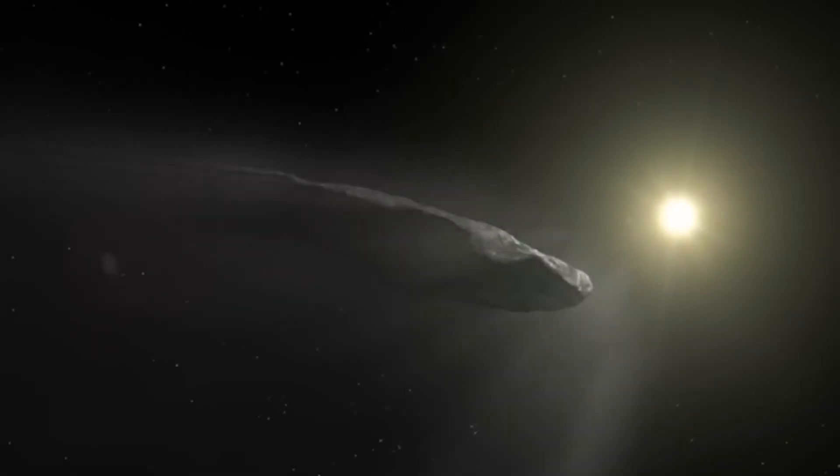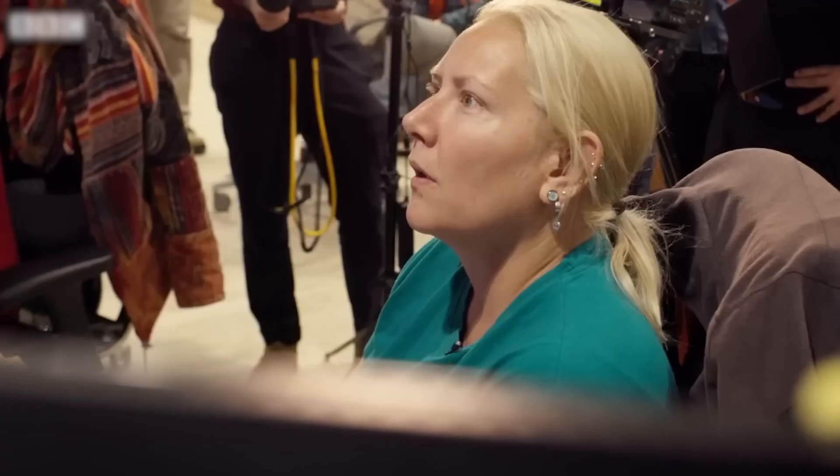But Loeb has a counter. If this were a probe, a piece of alien tech on a billion-year journey, what would it collect? Space dust? Ice? It'd be covered in the gunk of the galaxy. It's the ultimate cosmic road trip, and its windshield is filthy. We might not be looking at the object itself, but its accumulated baggage.